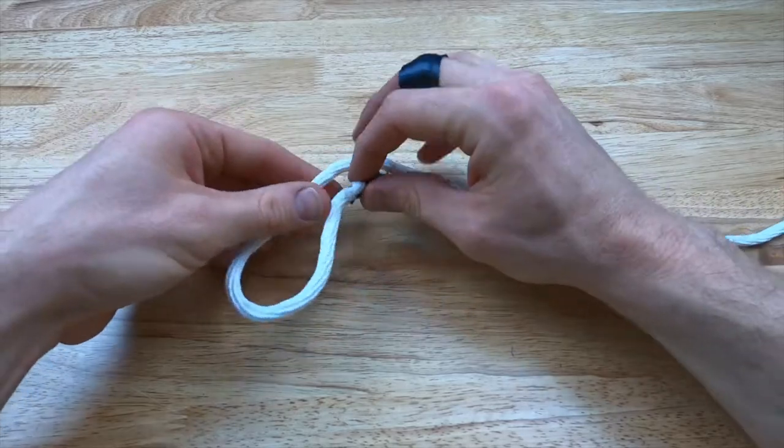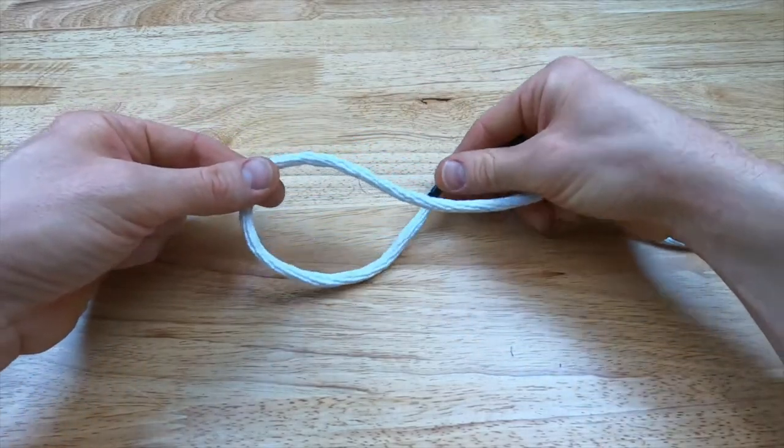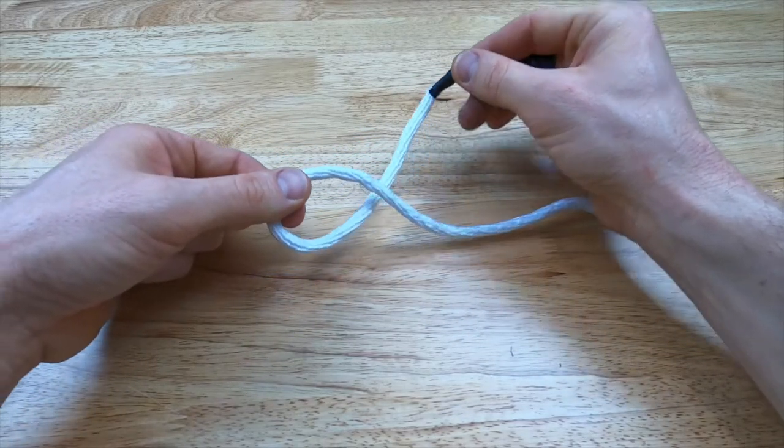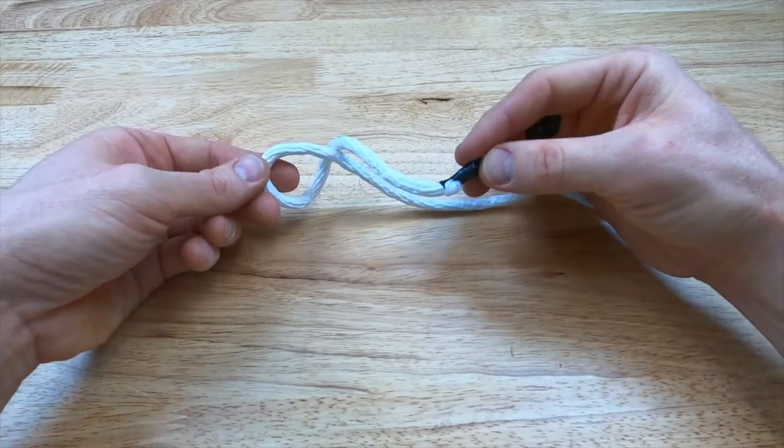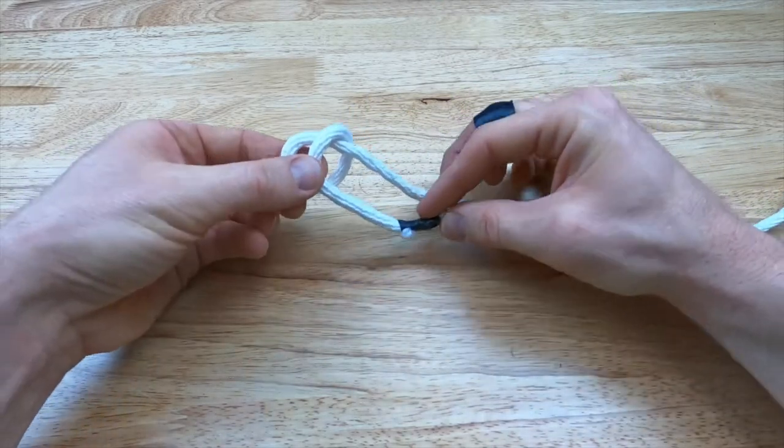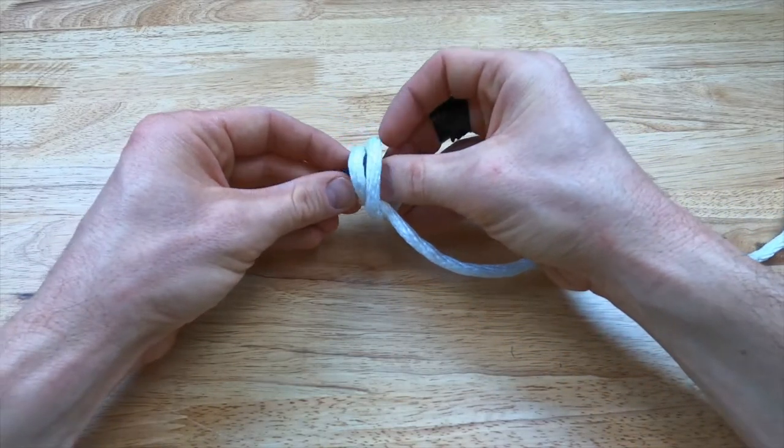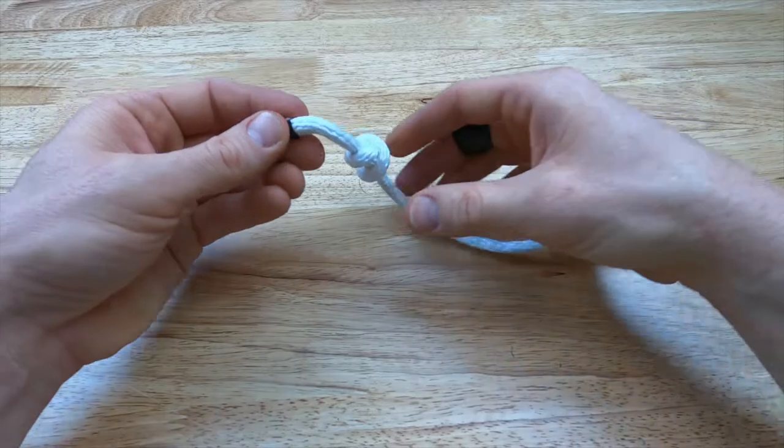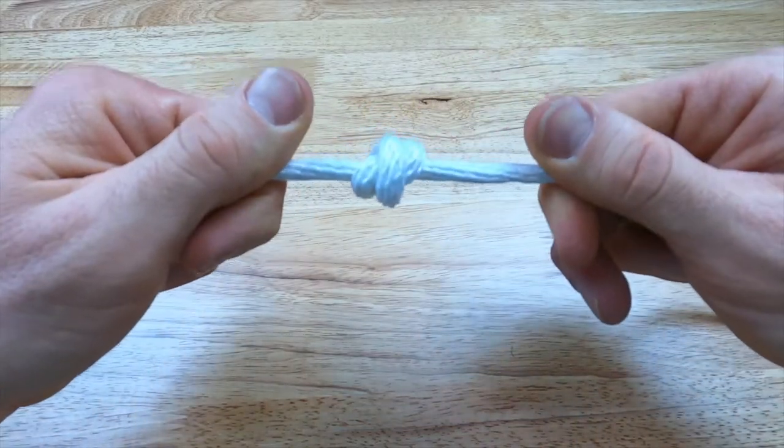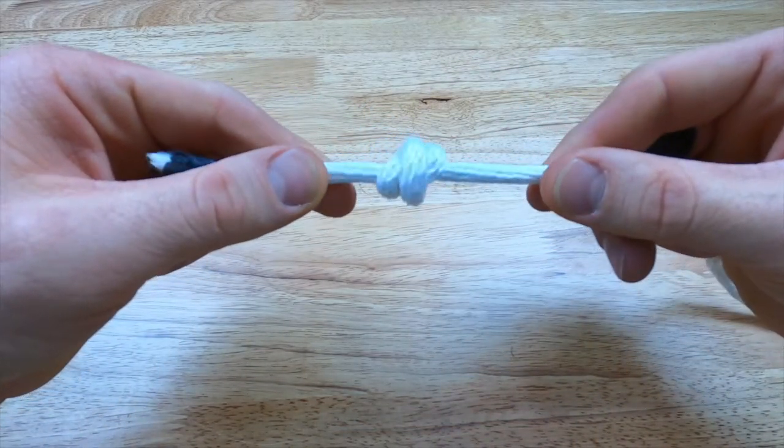Again for repetition, start by pinching where you want the barrel knot to go and wrap the standing end behind the running end. Make a second loop, pinch that as well, wrap it behind the standing end again, and pull the running end through the two loops you just created. That's all there is to the barrel knot.